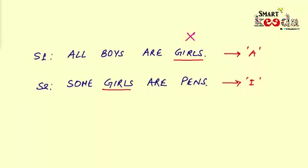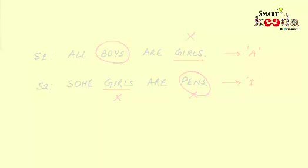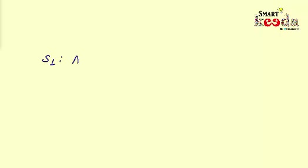Since Statement 1 is an A-type statement, the class in the predicate part is not distributed. And in Statement 2, which is an I-type statement, neither of the classes gets distributed. So we can see that in neither of the statements is the middle term being distributed. Therefore, we cannot find a definite conclusion between the classes boys and pens.